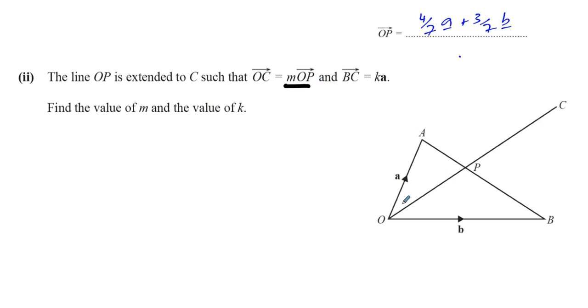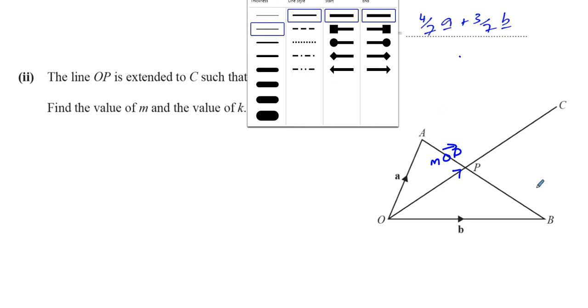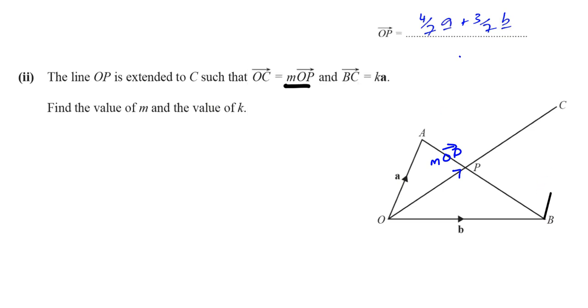So from O to C, let's put an arrow here, from O to C is m times O to P. And then it says B to C is ka. So let me just draw a line joining B and C together. B to C is a vector from, a vector called k to a. This is the vector ka.